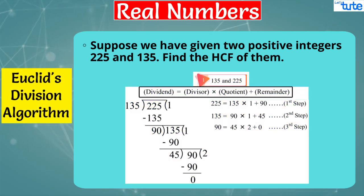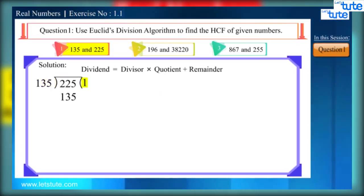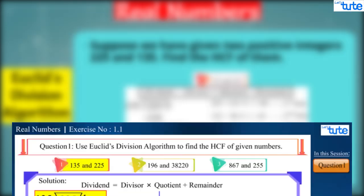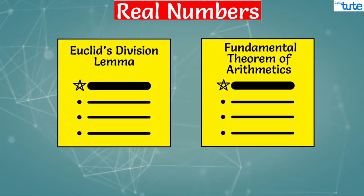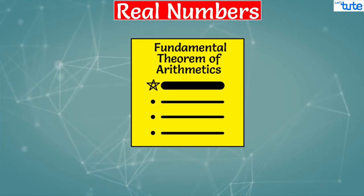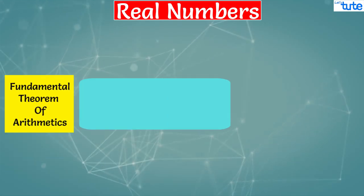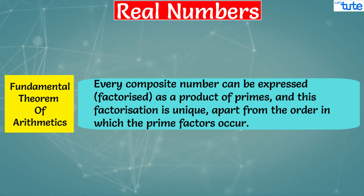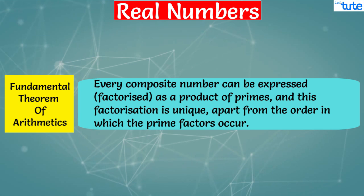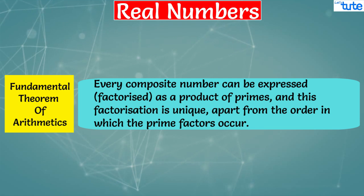Friends, in order to see the detailed procedure of solving this problem, do watch our video on exercise 1.1 problem solving. Now let's move on to the next part of the chapter, Fundamental Theorem of Arithmetic. Fundamental Theorem of Arithmetic states that every composite number can be expressed or factorized as the product of primes, and this factorization is unique apart from the order in which the prime factors occur.